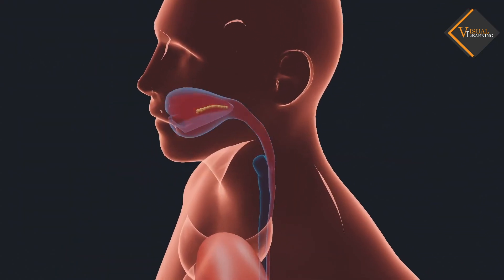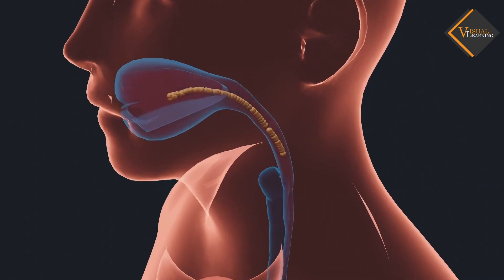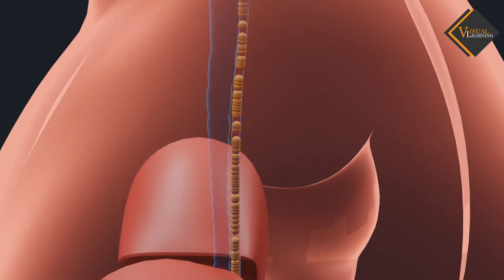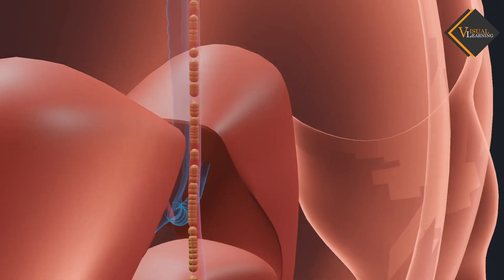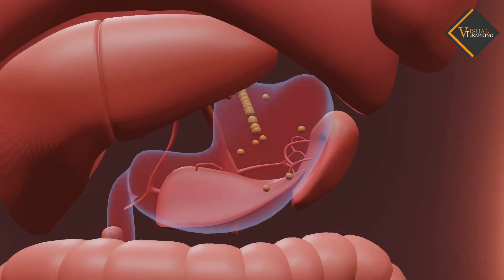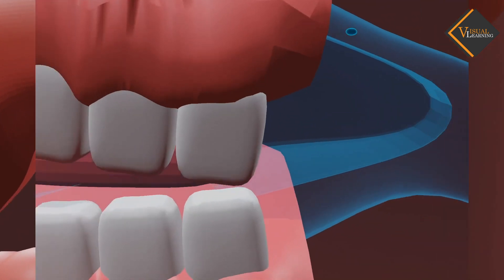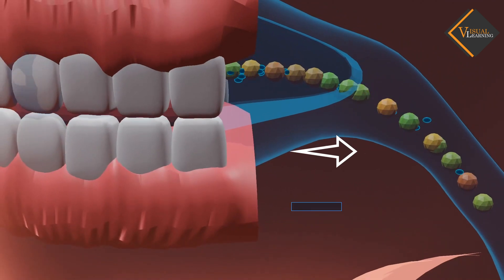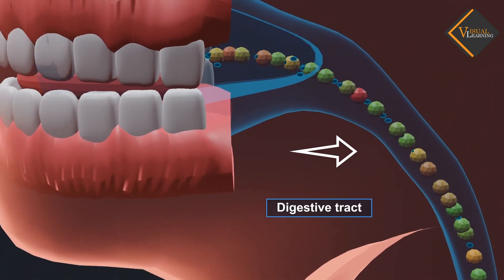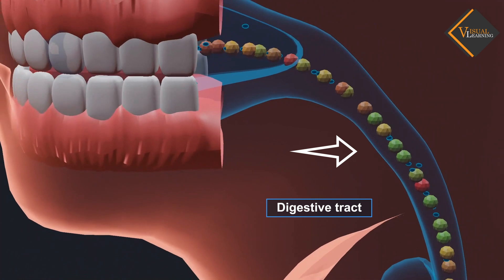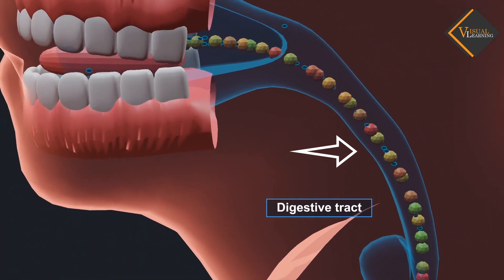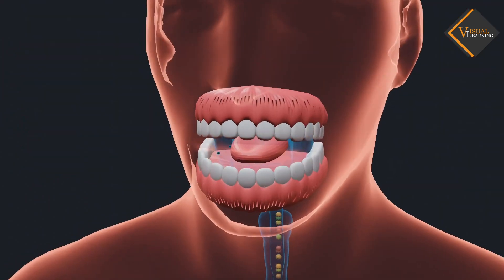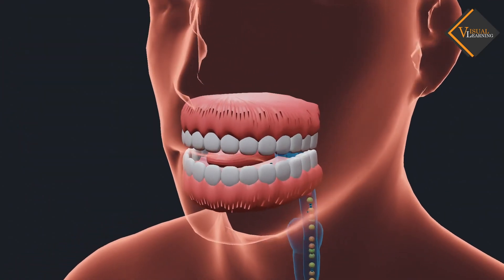What happens to the food once it enters our body? We eat various types of food which has to pass through the same digestive tract. Naturally, the food has to be processed to generate particles which are small and of the same texture. This is achieved by crushing the food with our teeth.